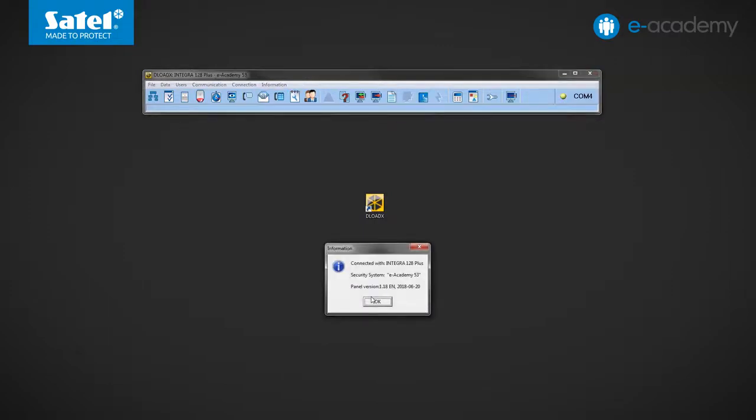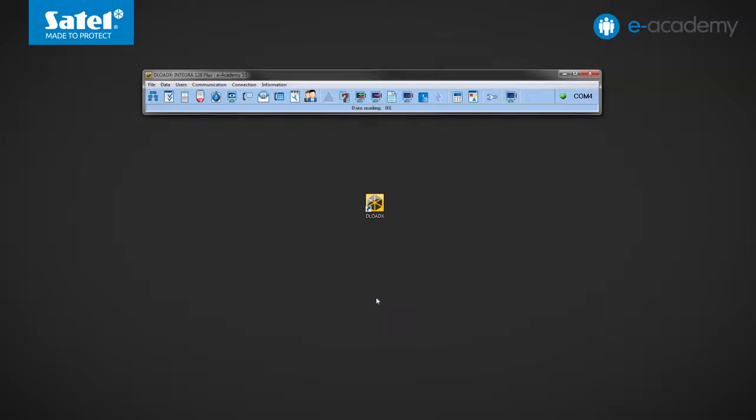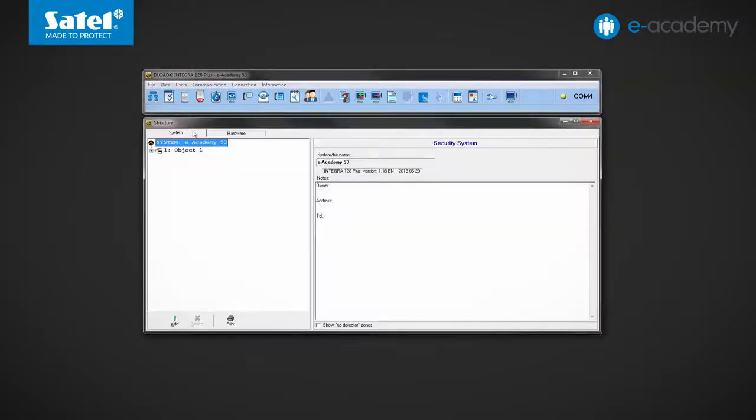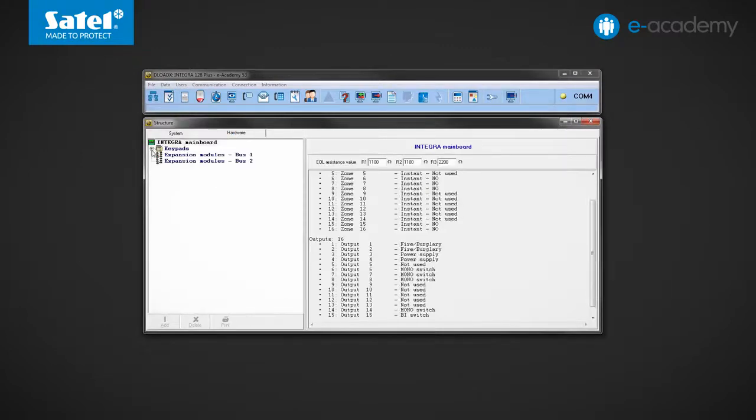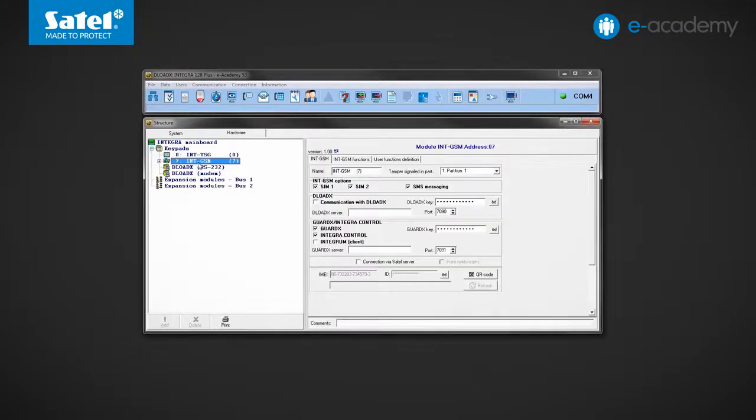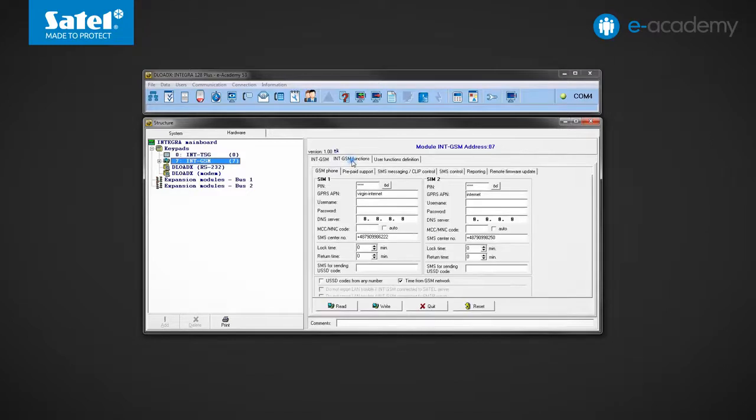Click yes to confirm. The next window shows information that a connection has been established. Press OK. The data has been read from the control panel. Open the structure window and go to the hardware tab. Find the INT GSM module on the list. Open the INT GSM functions tab and then SMS messaging clip control.